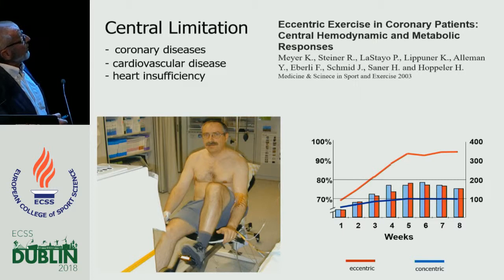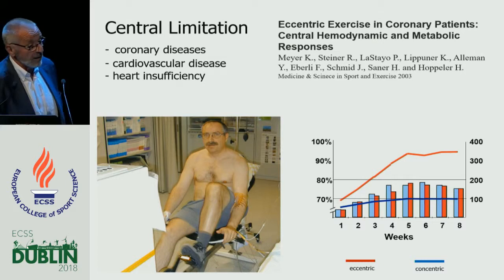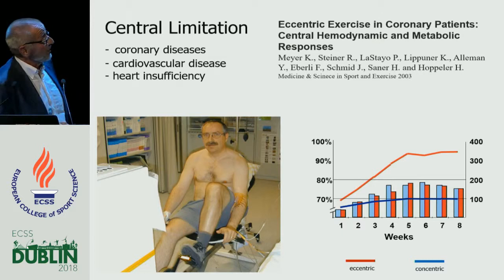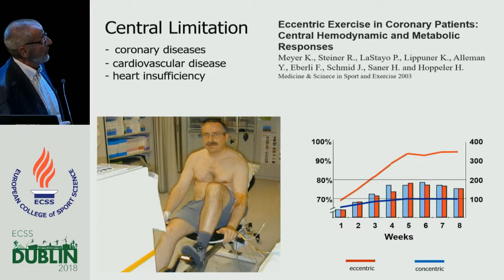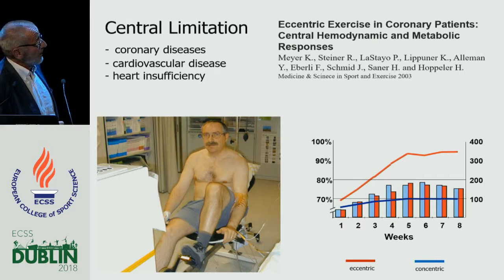The original intent was to use eccentric exercise in diseases with central limitation — coronary disease, cardiovascular disease, and heart insufficiency. Our cardiovascular doctors weren't really happy with this idea, so we had to prove there are no serious consequences of eccentric exercise. We matched post-infarct patients, trained them at the same heart rates — around 70% — while concentric patients trained at 100 watts and eccentric patients trained just under 400 watts.